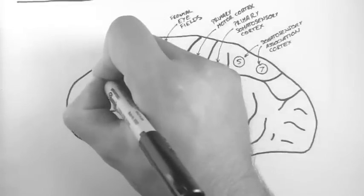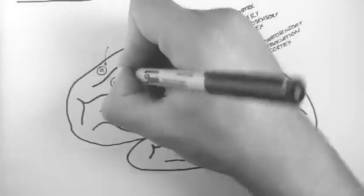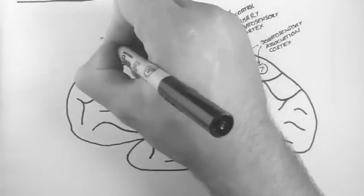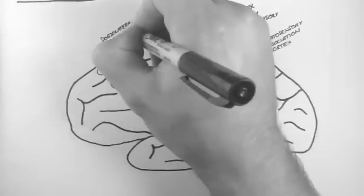Brodman areas 9 and 46, which are part of the superior frontal gyrus and the middle frontal gyrus, make up the dorsolateral prefrontal cortex. This is involved in motor planning.